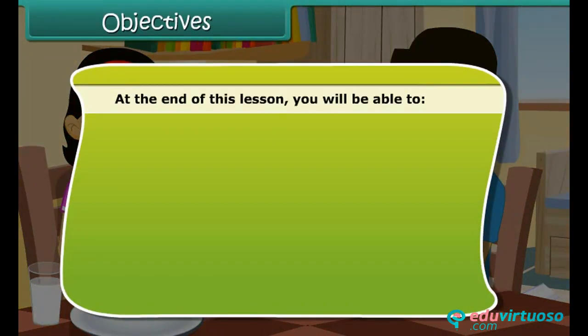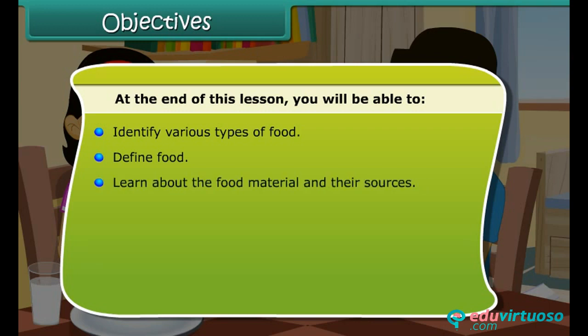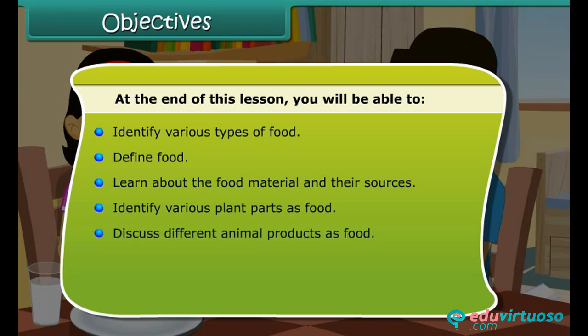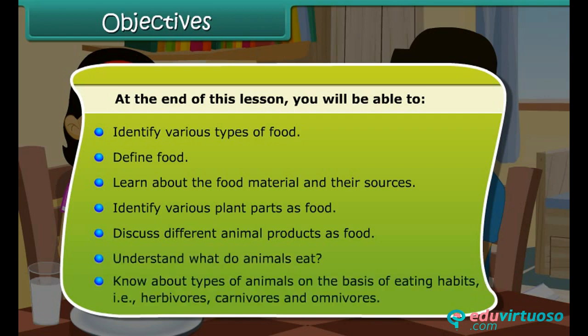At the end of this lesson you will be able to: identify various types of food; define food; learn about the food material and their sources; identify various plant parts as food; discuss different animal products as food; understand what animals eat; and know about types of animals on the basis of eating habits — that is herbivorous, carnivorous and omnivorous.